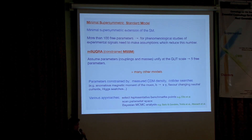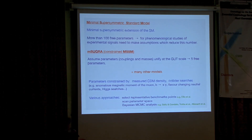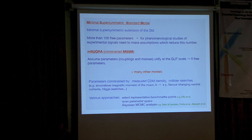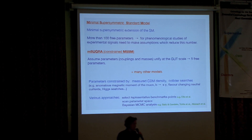Even five free parameters is quite a few. The parameters are typically constrained by the measured CDM density, and in MSUGRA, for an awful lot of parameter space, you end up with too much dark matter — so it's actually cosmology that places a significant constraint on these models. Supersymmetric processes could also contribute to other processes probed at colliders, in particular the anomalous magnetic moment of the muon and the decay rate of b quarks into strange quarks and gammas, placing further constraints on these models. There are several approaches: picking benchmark points representative of expected physics, doing parameter space scans, or using Bayesian MCMC analyses — an approach becoming more popular recently — to probe the parameters of supersymmetric models.